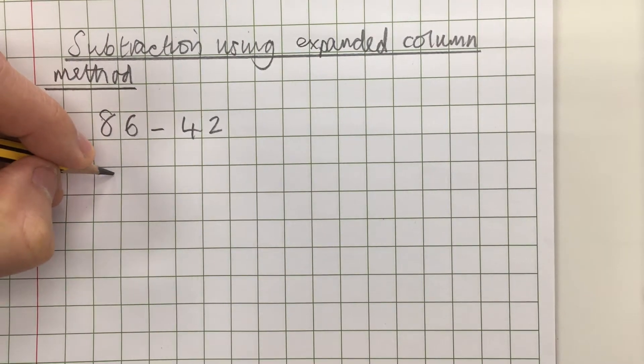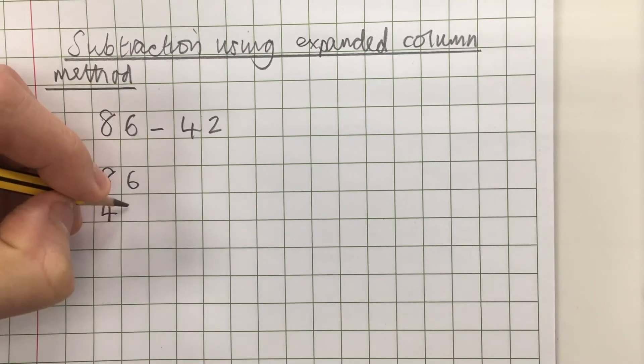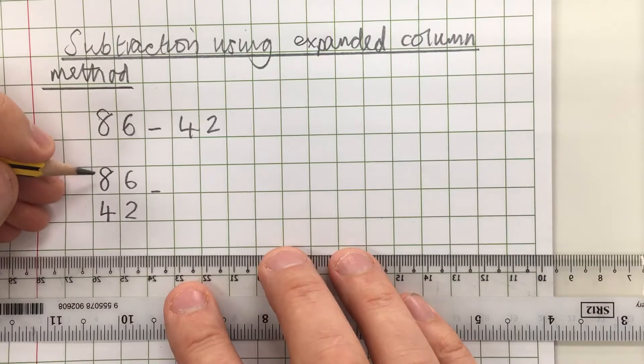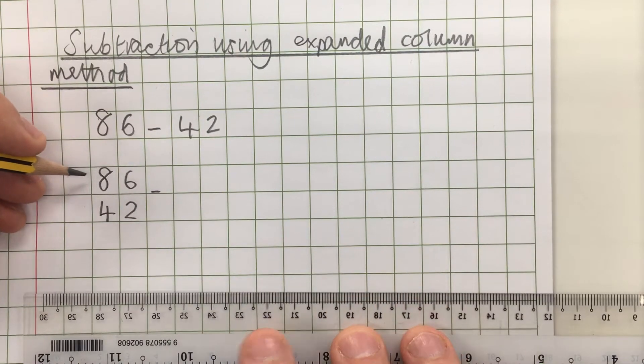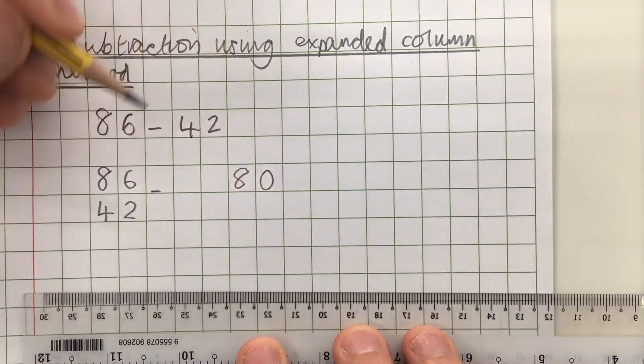What I'm going to do is first of all rewrite that with both numbers vertically one above the other and I'm going to partition my 86. I'm going to split it into eight tens or eighty and six.